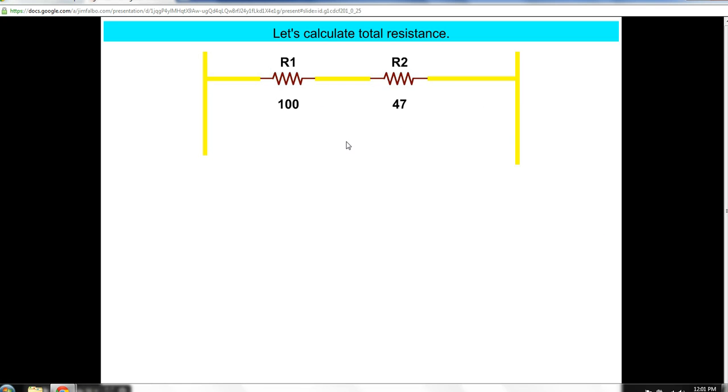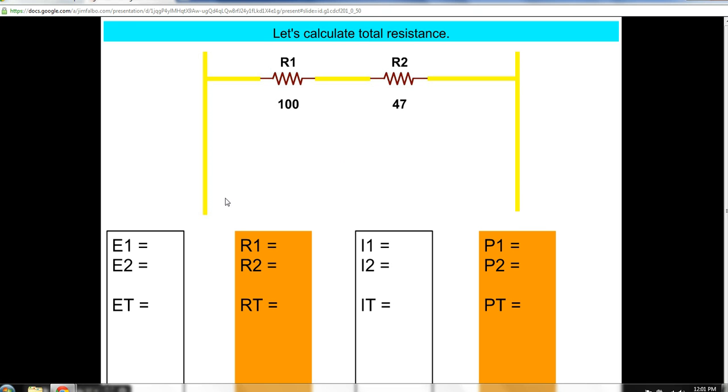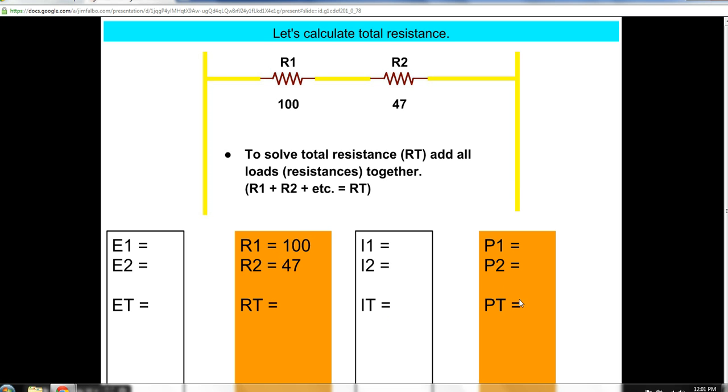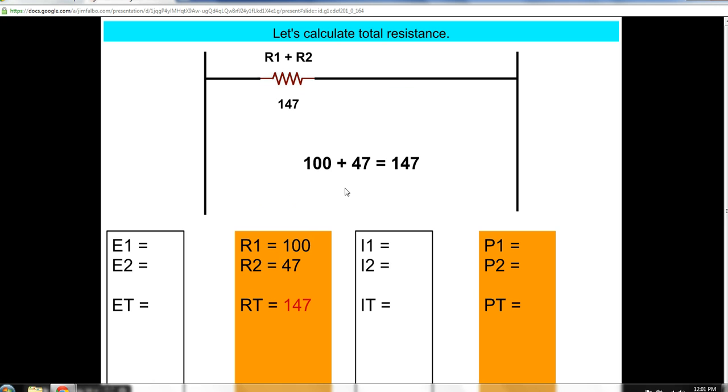Now we're going to calculate total resistance. And here are our rows, voltage, resistance, current, and wattage. E stands for electromotive force or voltage. R is resistance measured in ohms. I stands for intensity measured in amps. And P is power measured in watts. To solve total resistance, we just add our loads. 100 plus 47 is 147.